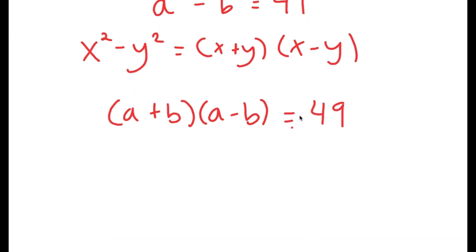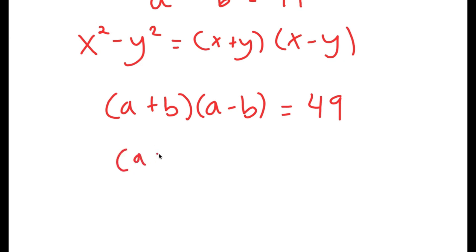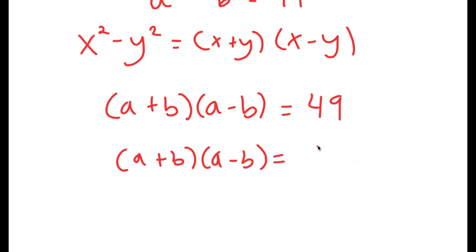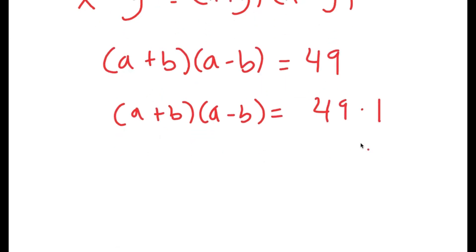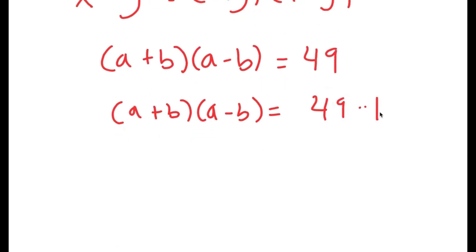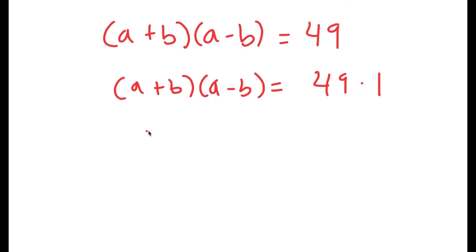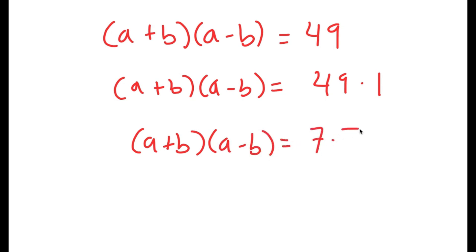From here, I can rewrite 49 as 49 times 1 — so 49 is equal to 49 times 1, that's true. And I can also rewrite it as 7 times 7.